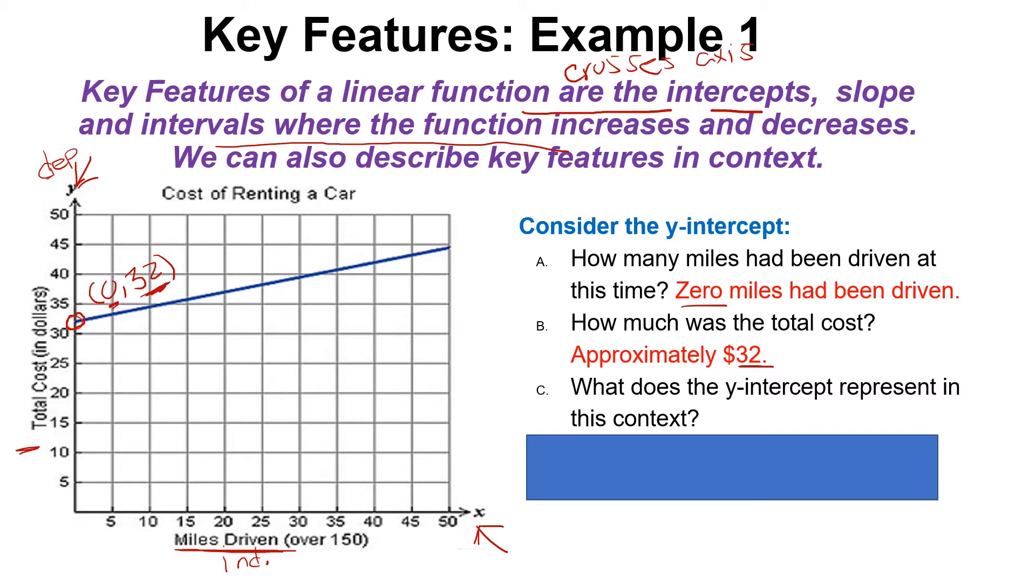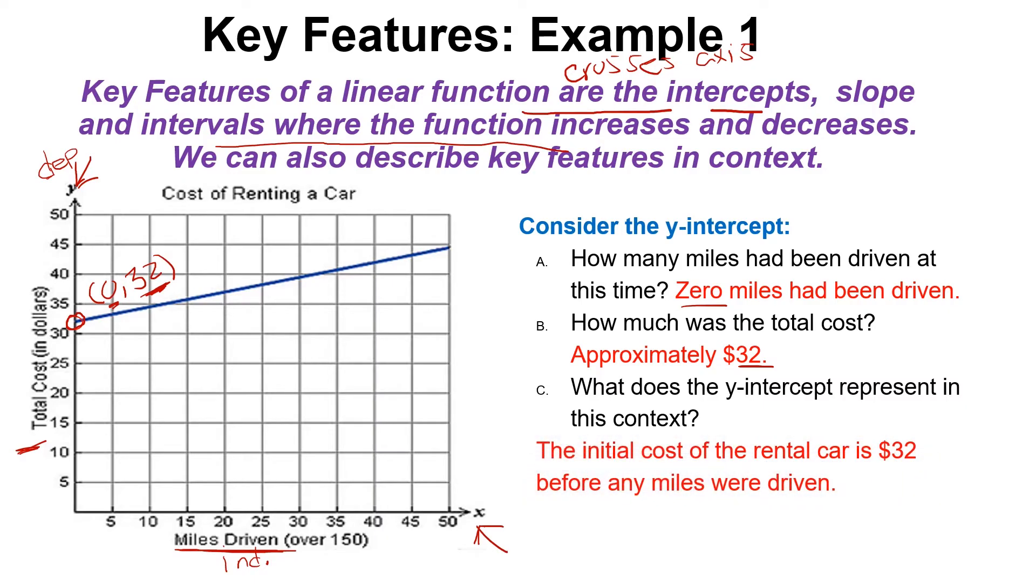And c, it says what does the y-intercept represent in this context? The initial cost of the rental car is $32 before any miles are driven. So before we even drive that car off the lot, we would have to pay $32 before we drive any amount of miles.